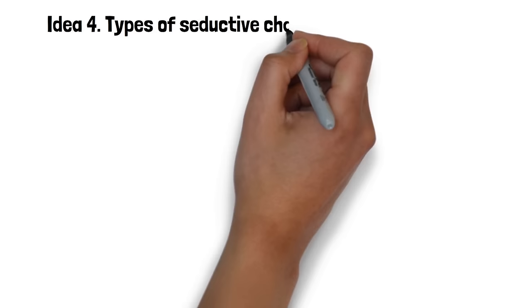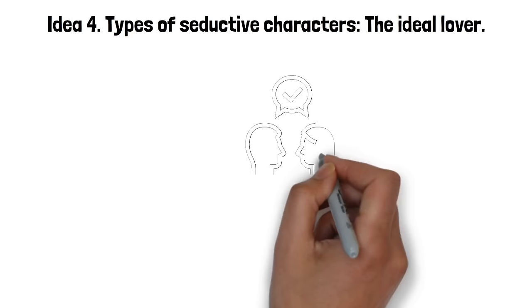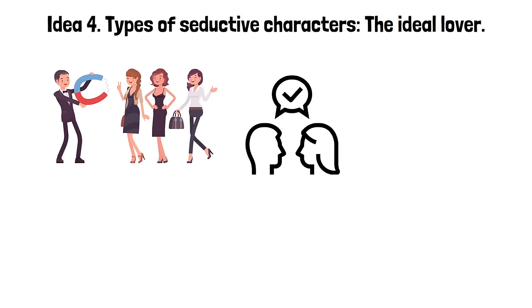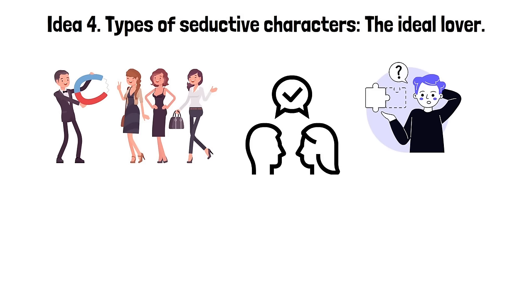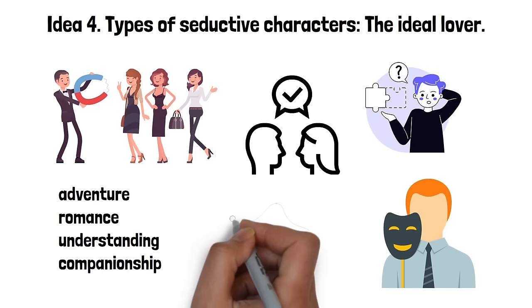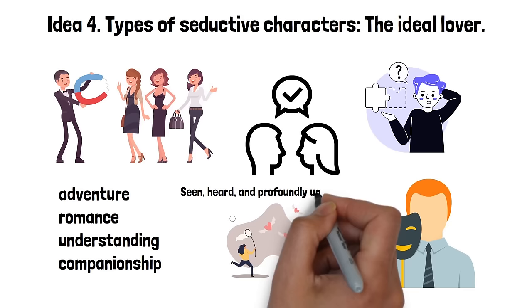Idea 4. Types of seductive characters. The ideal lover. The ideal lover is someone who excels in understanding the needs and desires of their object of interest. They're capable of morphing into the perfect partner for anyone they desire, presenting themselves as a dream come true. This character is adept at recognizing what is missing in a person's life, what they yearn for, whether it be adventure, romance, understanding, or companionship. The ideal lover then embodies these missing qualities, providing the illusion of completeness and fulfilling hidden dreams. Their allure is based on this ability to reflect and personify their partner's deepest desires and to make them feel seen, heard, and profoundly understood.